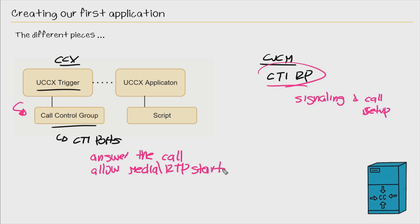The ports are used to answer that call and to allow the media or the RTP stream to start. In the event that CTI ports weren't available, the calling party would hear a busy signal. Before creating our first script, we have to create this application so we can define the script to be used. Then we associate a trigger with that application, and that trigger must reference a call control group which has those CTI ports.